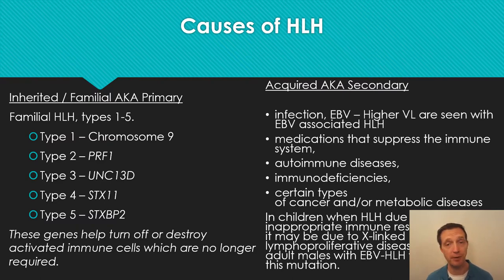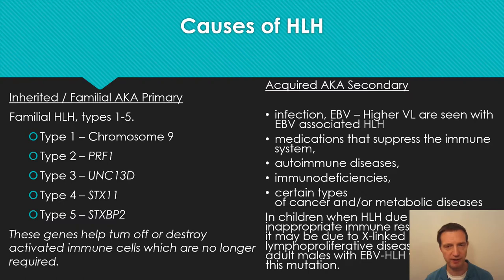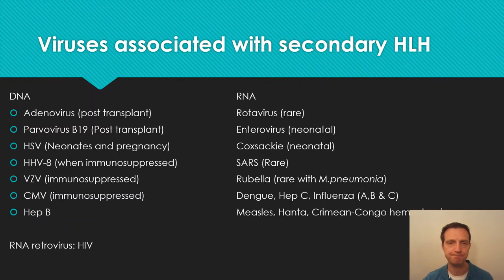For the acquired type, the main causes are either cancers or infections. A very common infection is Epstein-Barr virus — the same virus that causes glandular fever — which is a form of herpes virus. There are quite a few human herpes viruses: HSV-1 and 2, VZV, and EBV, among others. Also implicated are medications that suppress the immune system, other immunodeficiencies, and autoimmune diseases. In children, there can be an X-linked immunoproliferative disease, and a quarter of adults, especially males, also show HLH associated with Epstein-Barr virus.